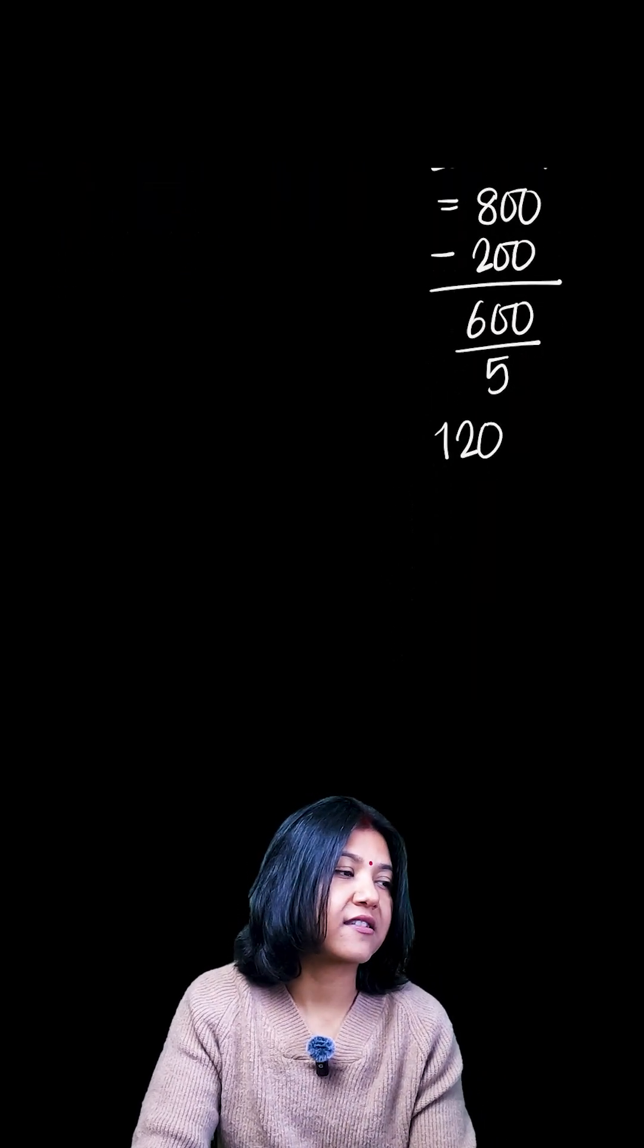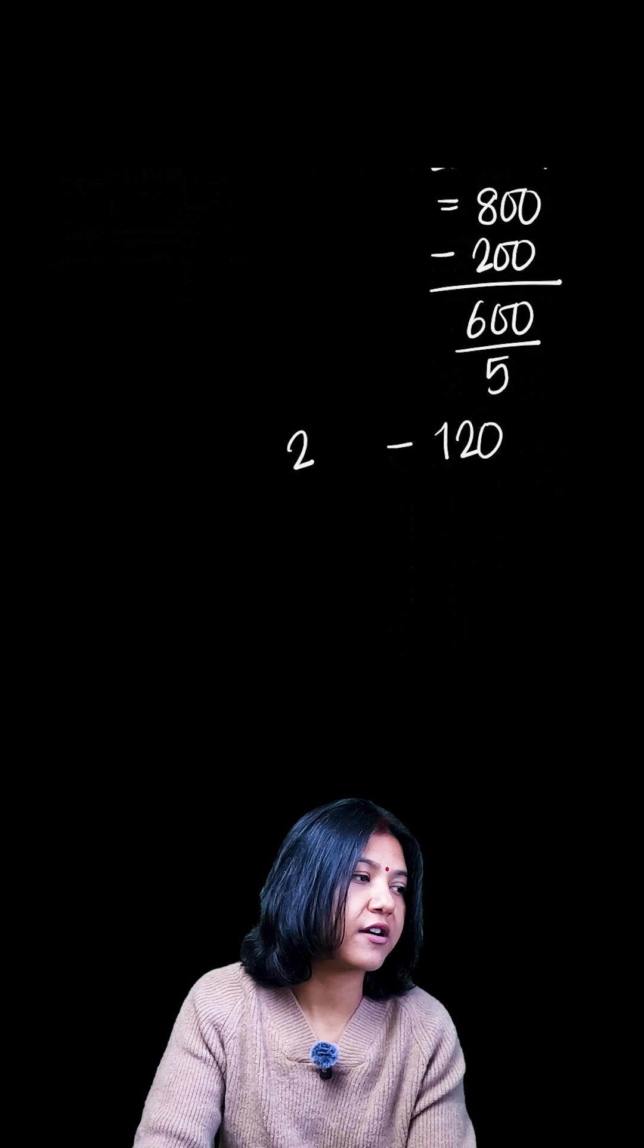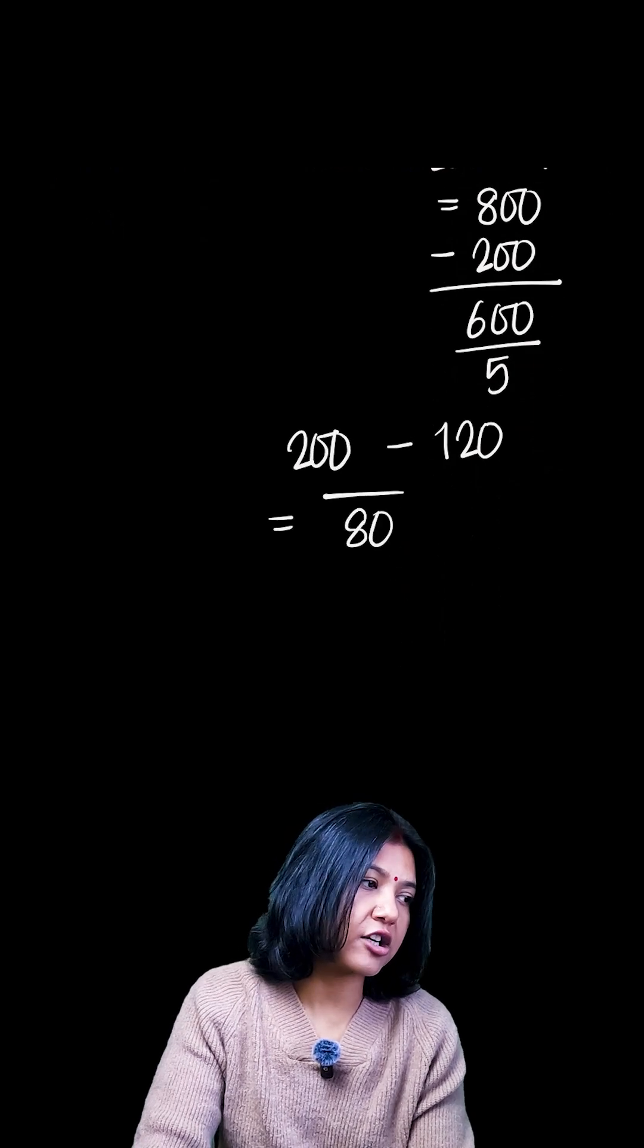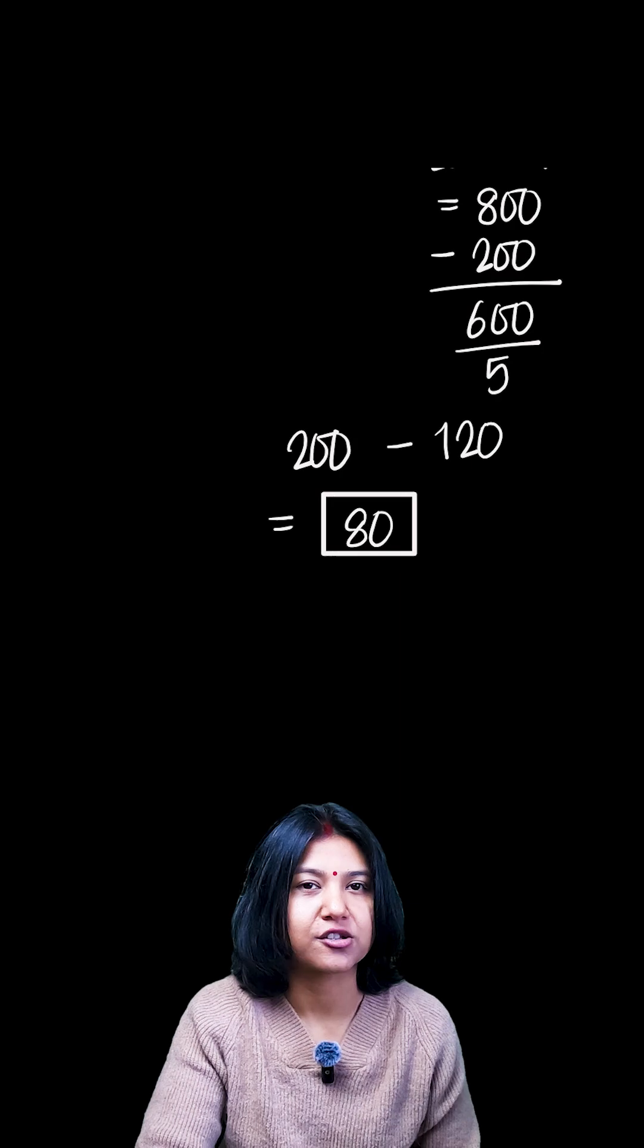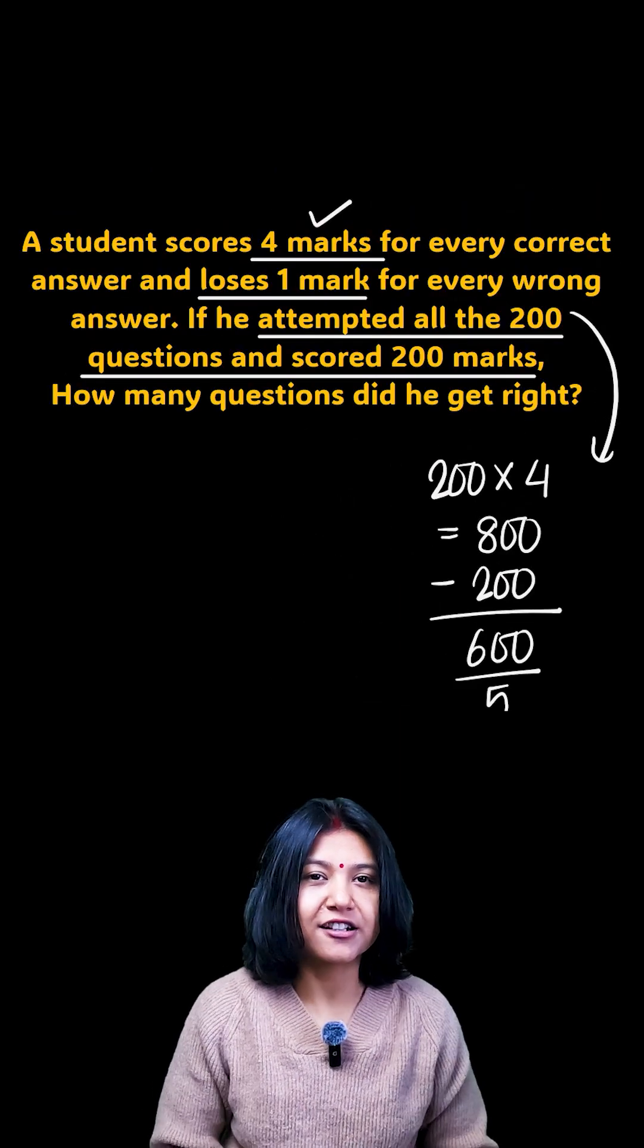So of course if I subtract this number from 200 it gives me the number of questions which you went right, or this is the number of questions you actually got correct. This is really interesting and it does save you a lot of time.